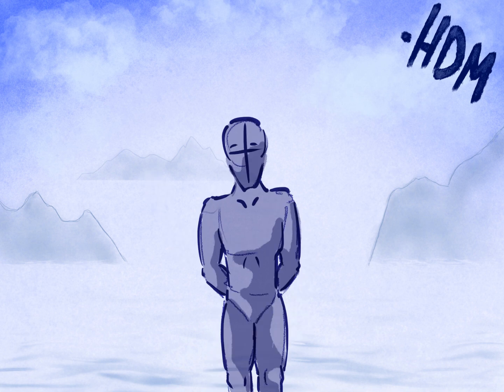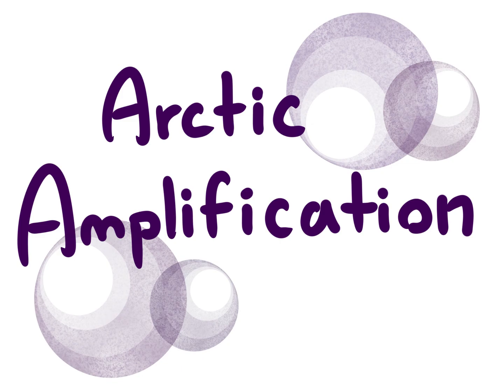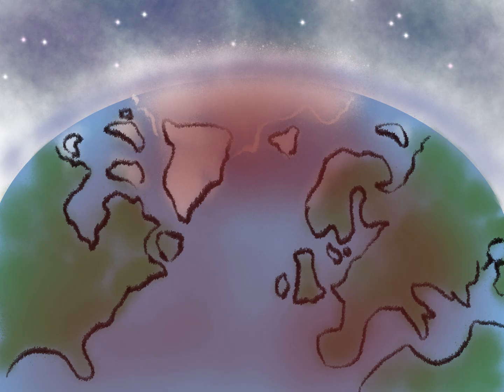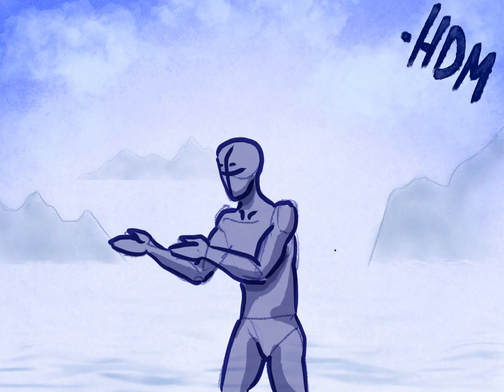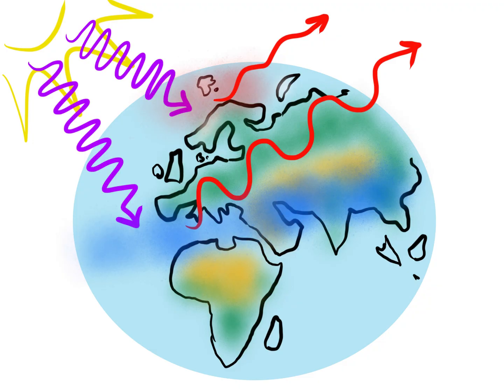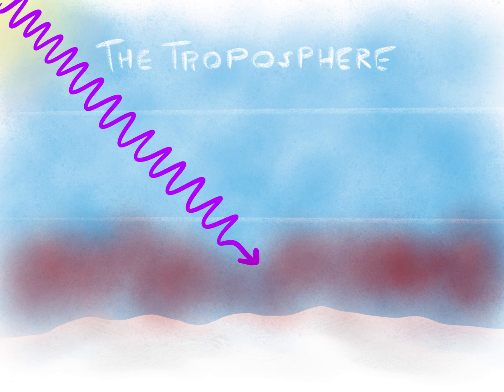Hello again, welcome to Part 2 of the Arctic Amplification series. Quick refresher: Arctic Amplification is the process by which the Arctic is warming faster than the rest of the globe. Last time we covered three feedback loops that contribute to Arctic Amplification, namely the Planck feedback, the Ice-Albedo feedback, and the Lapse Rate feedback.